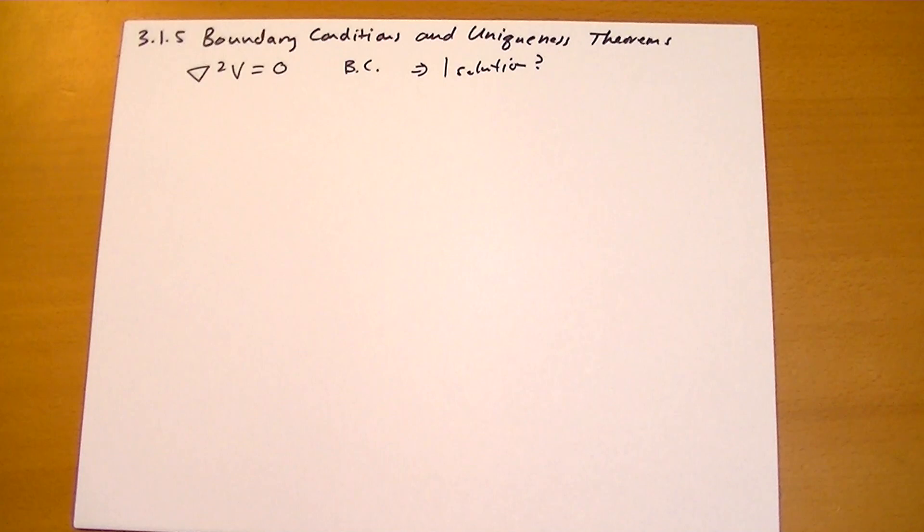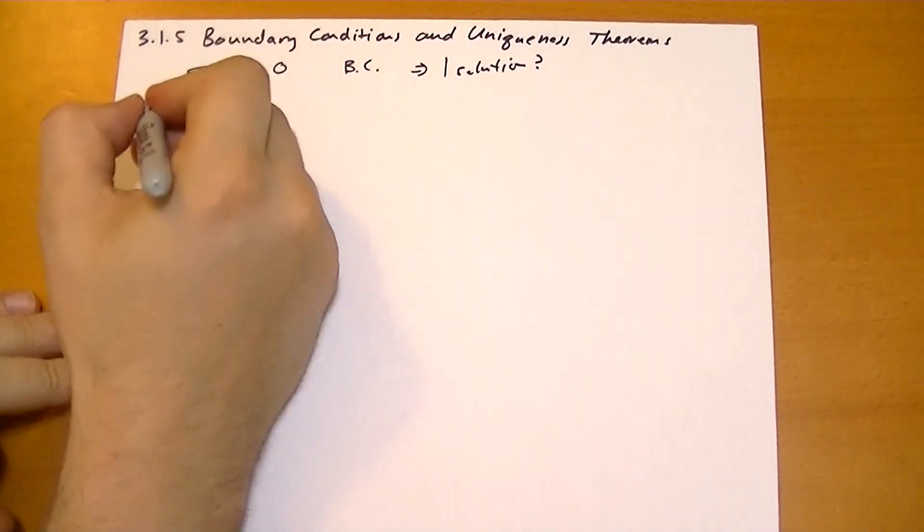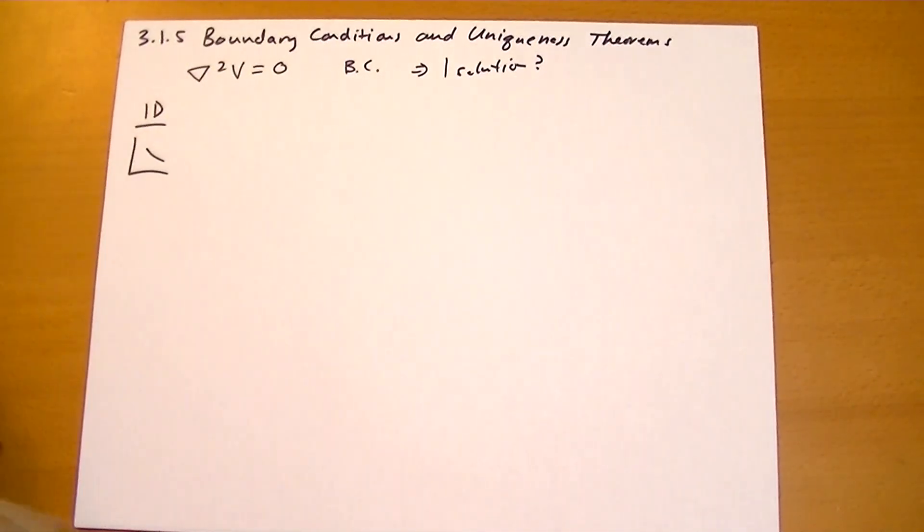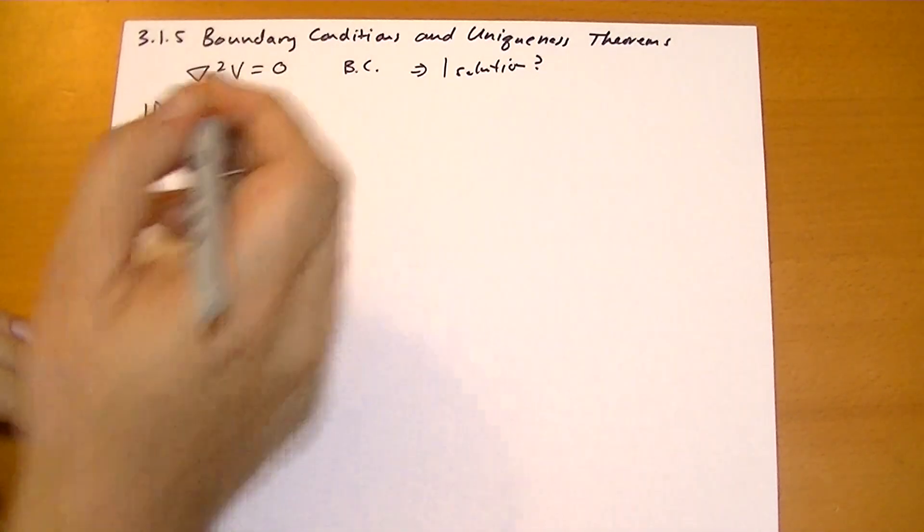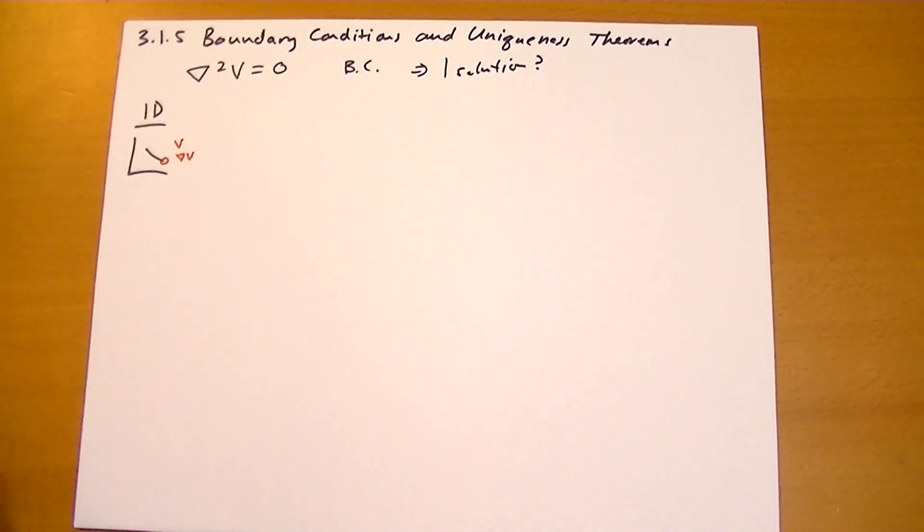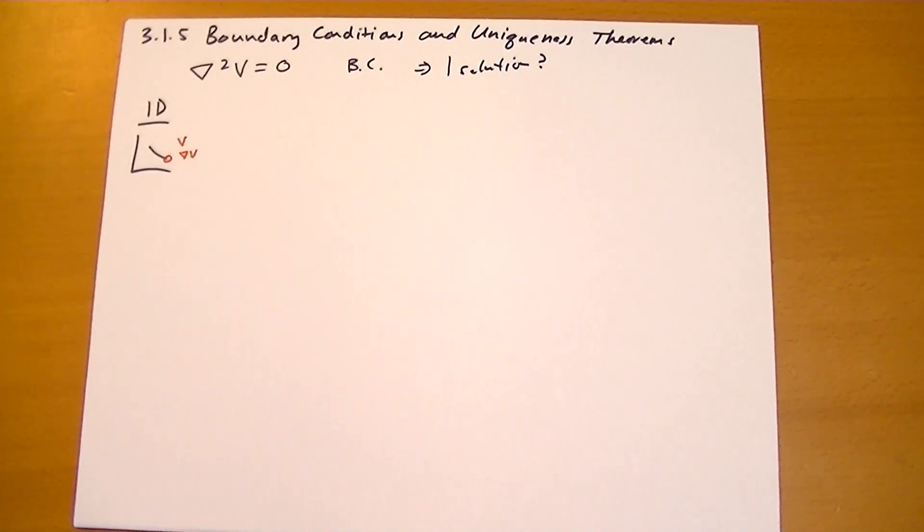In one dimension, if you think about a line, we could specify at any of the endpoints either V or grad V. That would give us some information about what that end has to look like. But if we just specified one end, the other end can be anything at all, and we have an infinite number of solutions. So we need to tie down and specify both ends, or all ends in one dimension, to get a unique solution.